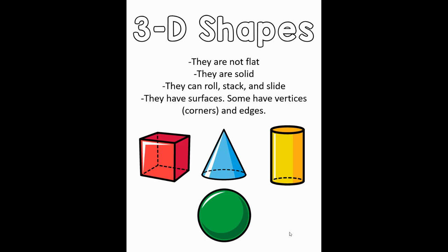Some of them can roll, some of them can stack, and some of them you can slide across a table or across the ground. They have surfaces. Some of these shapes also have vertices or corners and edges.